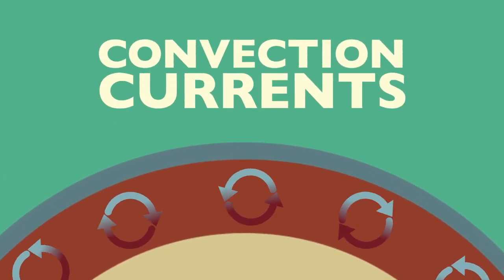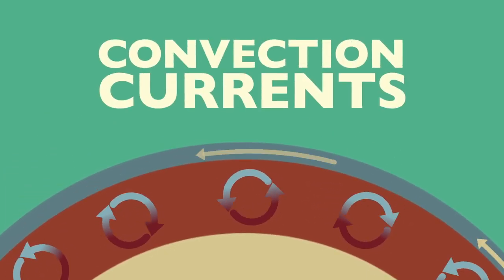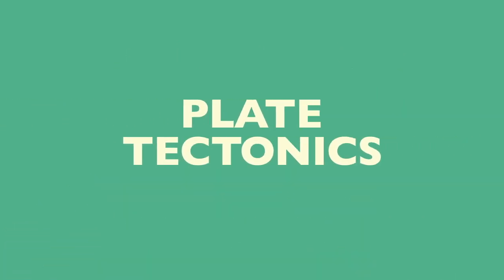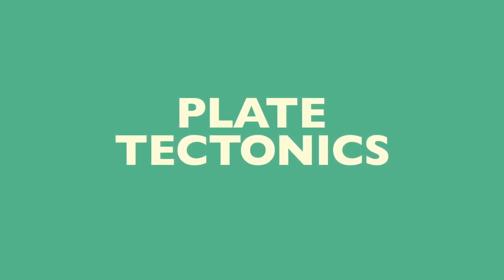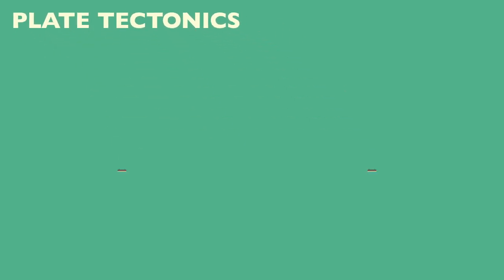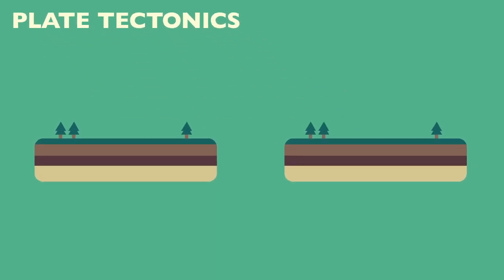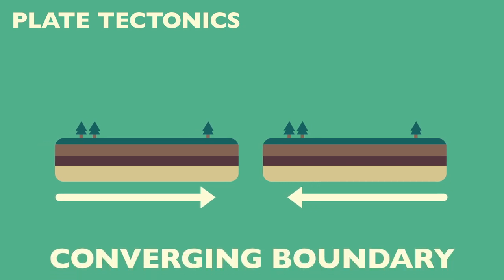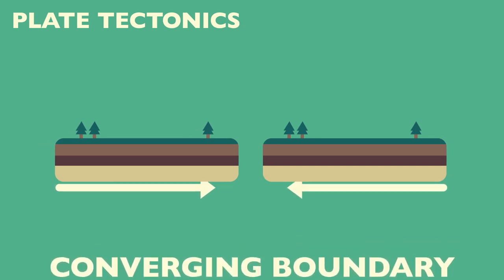Within the mantle, heat rises and falls throughout the molten rock. This causes convection currents. As the magma moves, so do the plates above. The movement of the Earth's plates and the changes this causes is called plate tectonics. The theory of plate tectonics explains how mountains are formed and why volcanoes and earthquakes occur.